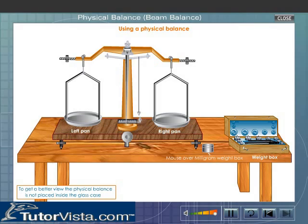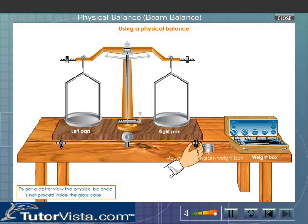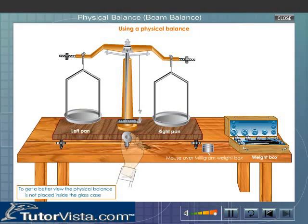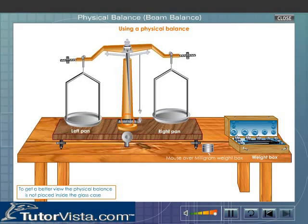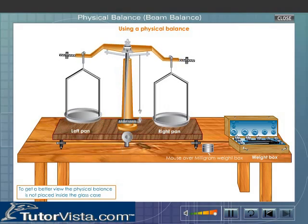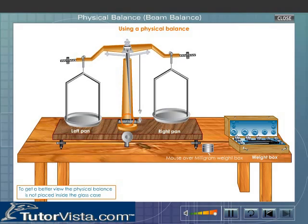Using a physical balance, adjust the leveling screws such that the plumb line points vertically downward. Gently raise the central rod by turning the lever. If the pointer remains at zero mark or oscillates equally on either side of the zero mark, then the balance is fully adjusted.